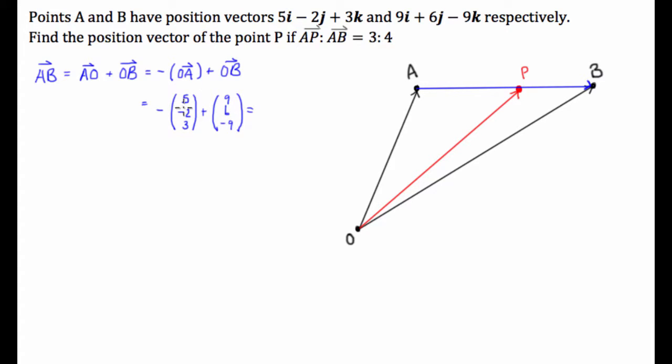And that's going to be equal to, negative 5 plus 9 is 4. We have positive 2 plus 6 is 8. And we have negative 3, take 9 is negative 12. Great.